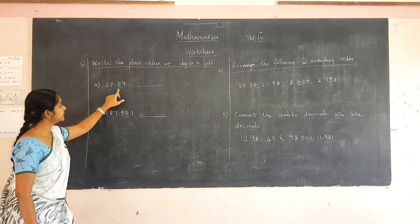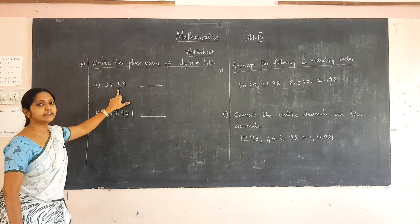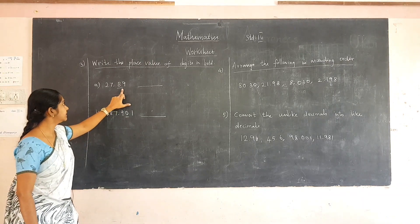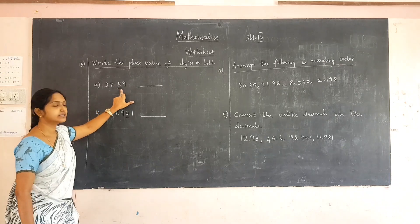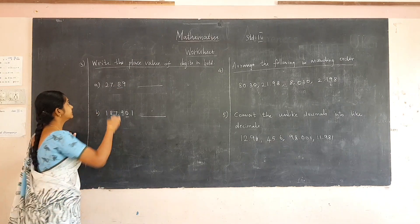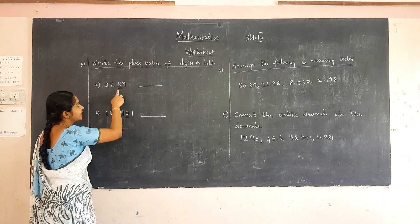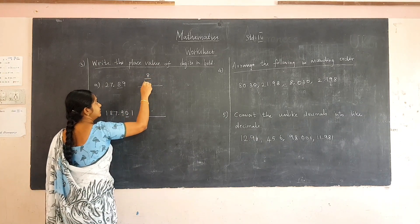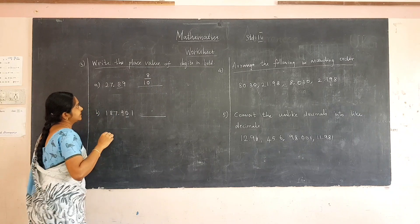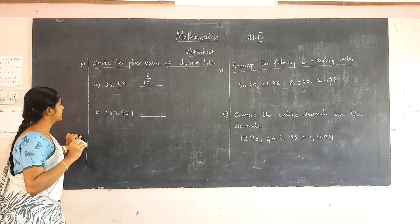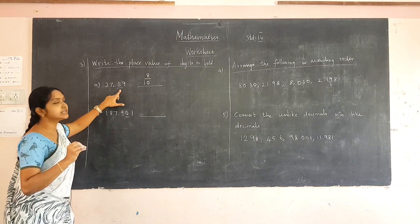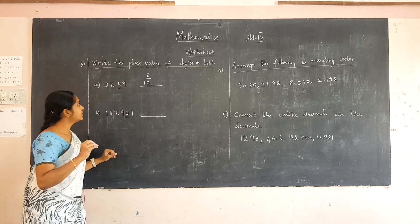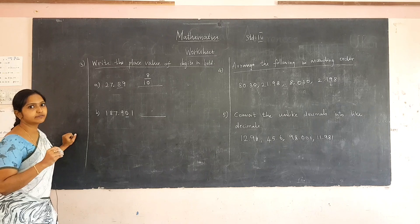The third question is: write the place value of the digit in bold. I have underlined the bold digit. We are going to find the place value of the underlined digit. Here it is eight. Eight is after the decimal point, and the place value of eight is tenths, so we have to divide that number by ten. Eight by ten is the place value of eight.